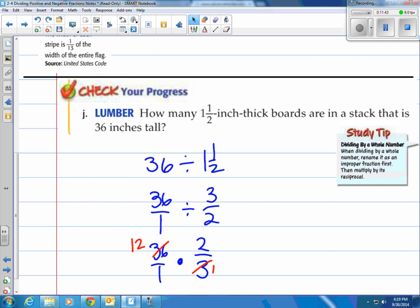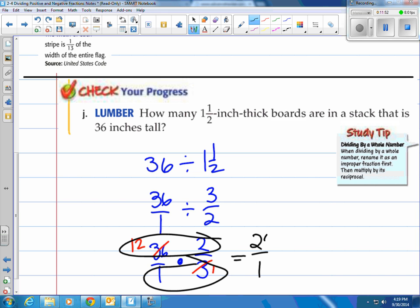Now it's nice. We have 1s on the bottom. So let's multiply across. 1 times 1 on the bottom, that's going to equal 1 on the bottom. And then 12 times 2 on the top, that's going to give you 24. 24 over 1 is 24. So the answer is we can make 24 1 and 1/2 inch thick boards.